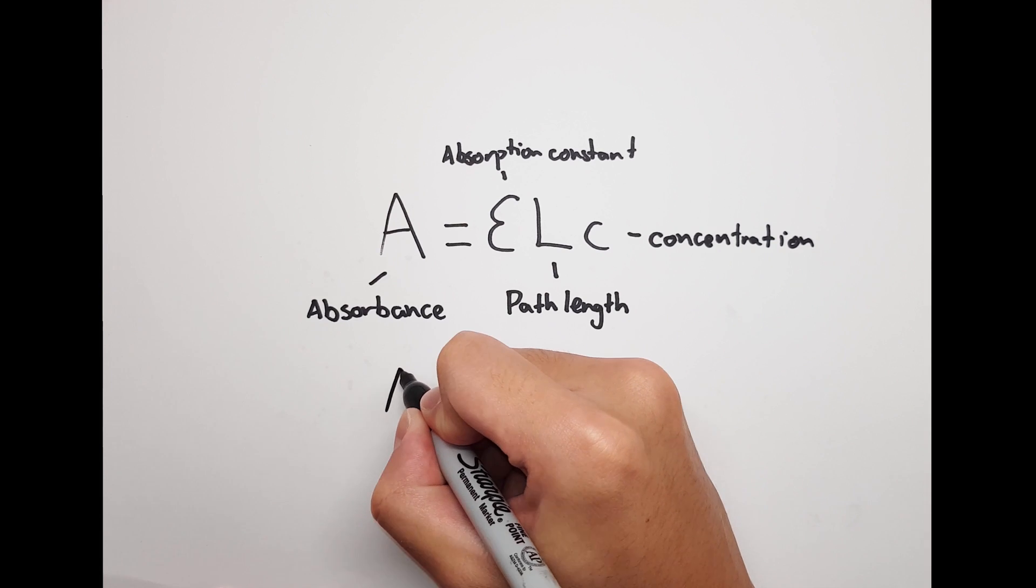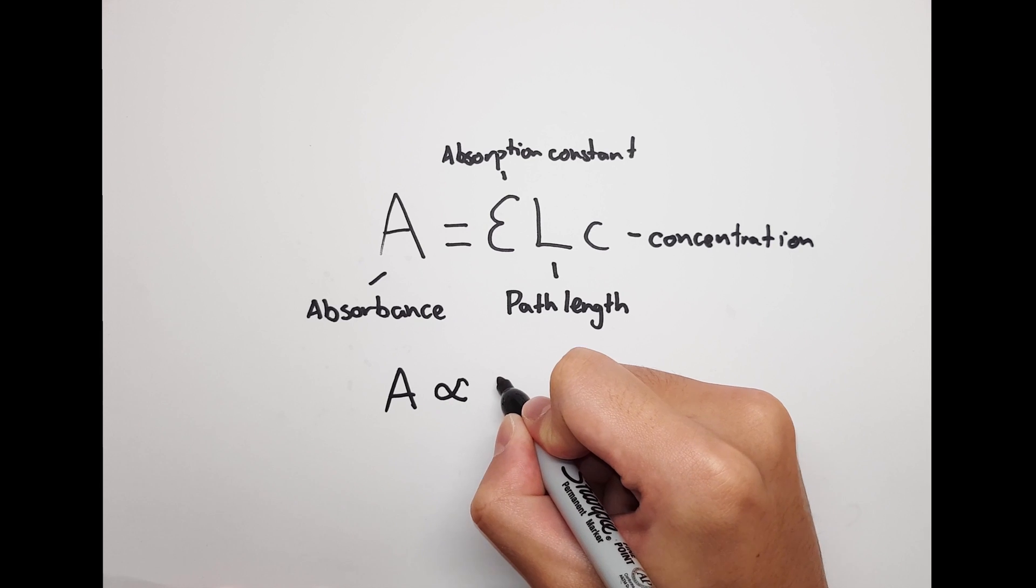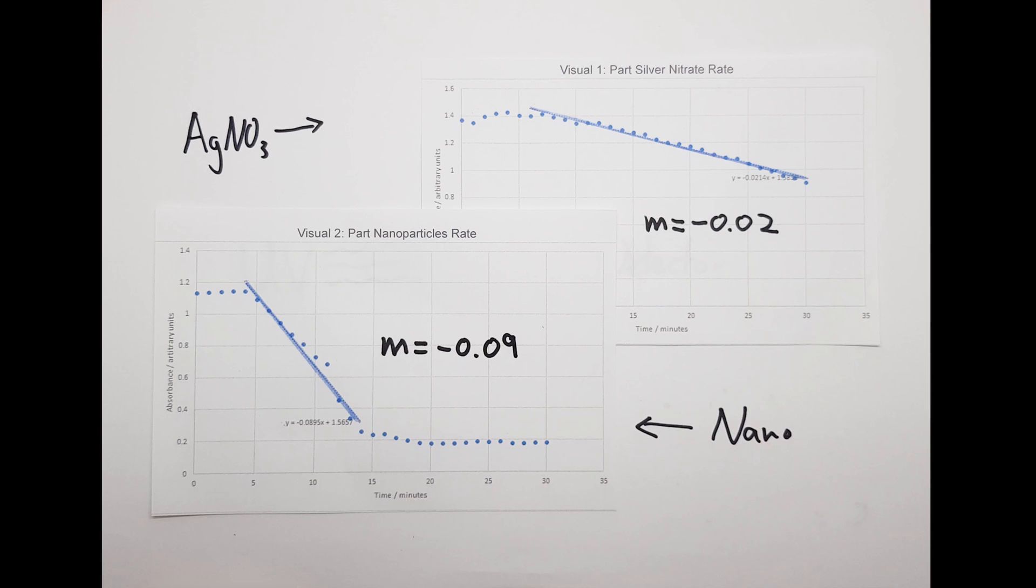We know that absorbance is proportional to the concentration of 4-nitrophenol. Therefore, silver nanoparticles cause these particles to react at a faster rate, demonstrating the catalytic power of silver nanoparticles.